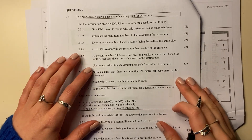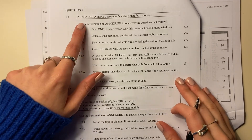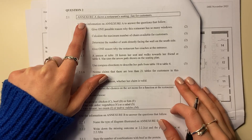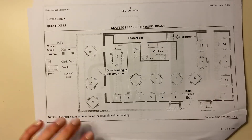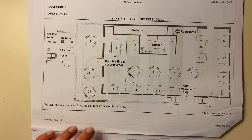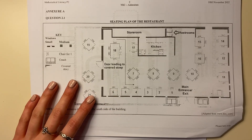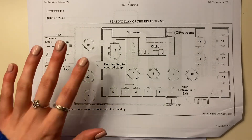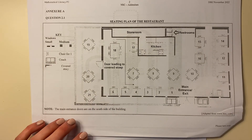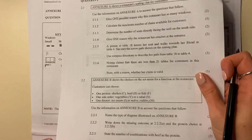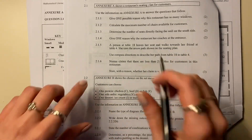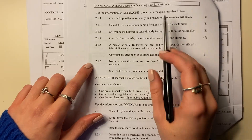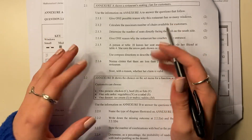Let's start question 2.1. It says: Annexure A shows a restaurant seating plan for customers. As always, go and find the restaurant seating plan in the annexures. So here it is. Obviously yours will be printed with more clarity, but that is the seating plan we're going to use to answer these questions. Use the information on Annexure A to answer the questions that follow — it's all going to be interpretation from that plan.